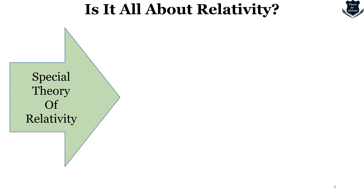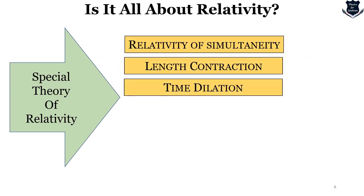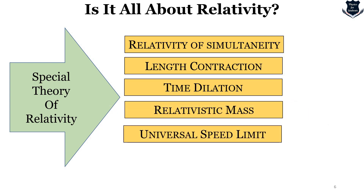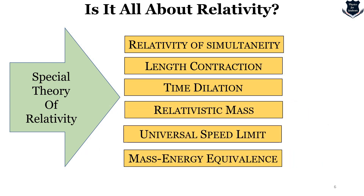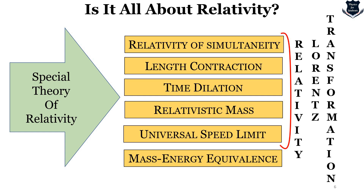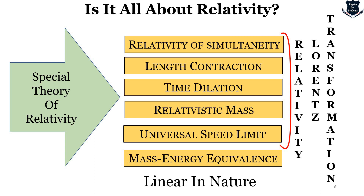Special Relativity deals with relativity of simultaneity, length contraction, time dilation, relativistic mass, universal speed limit — that is the speed of light — and mass-energy equivalence. All of this is more relativistic in approach, coming from the basic idea called the Lorentz transformation. Length contraction, time dilation, relativity of simultaneity — all of this comes from Lorentz transformation, and we can say all of them are quite linear in nature, moving in a linear direction, which is why it is framed in terms of inertial frames of reference.